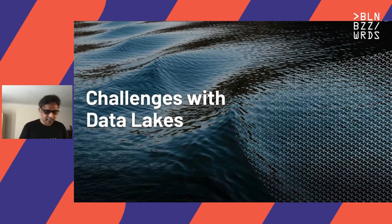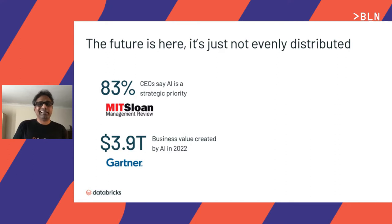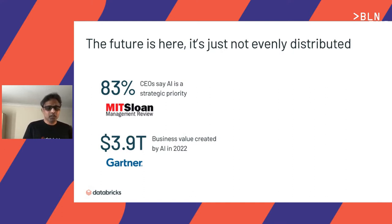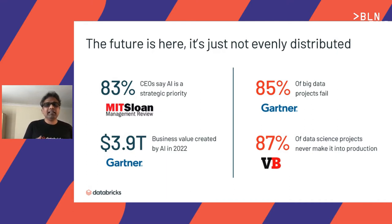What are the typical challenges with data lakes and how Databricks Delta solves them? MIT Sloan Management Review says 83% of COEs say AI is a strategic priority, and Gartner says $3.9 trillion in business value could be created by AI by end of 2022. Yet the same Gartner says 85% of big data projects fail, and VentureBeat says 87% of data science projects never make it into production.